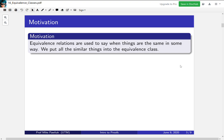The motivation for this is that equivalence relations are what we use to say when certain things are the same or similar in some way. Now we're going to put all of the similar things into equivalence classes. We're going to group them together based on whether they're the same.